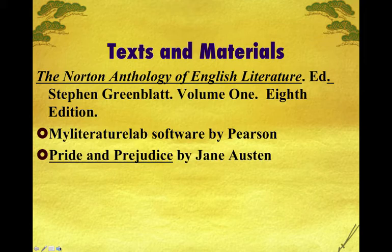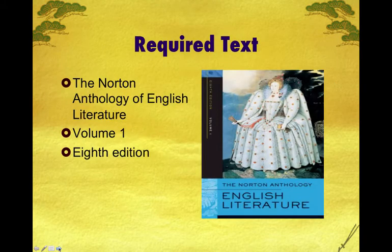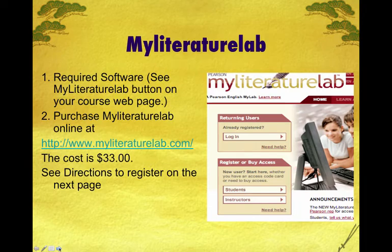This course has three required items. The first is the Norton Anthology of English Literature, Volume 1, Edition 8, by Steven Greenblatt. The second is My Literature Lab software — you'll buy an access code from Pearson. And the third is Pride and Prejudice, a novel which you can get anywhere, including online. You can get the anthology at the bookstore. My Literature Lab is accessible online at www.myliteraturelab.com and costs $33, or at least that's what it was in the spring of 2013.